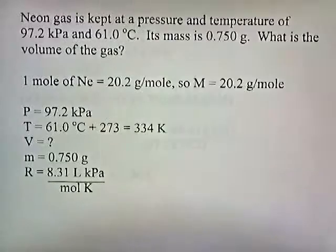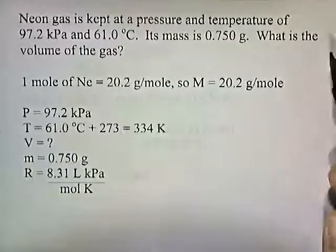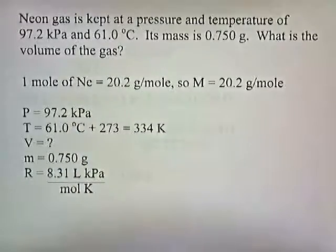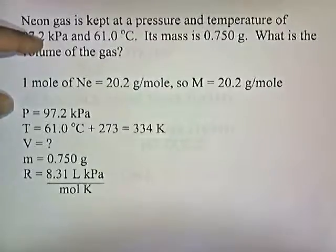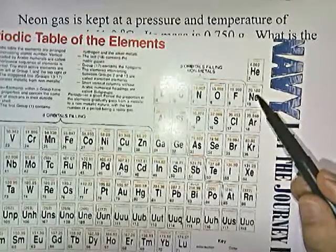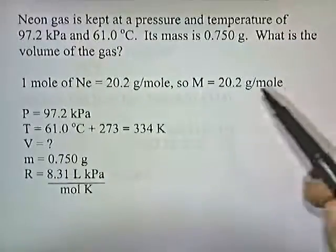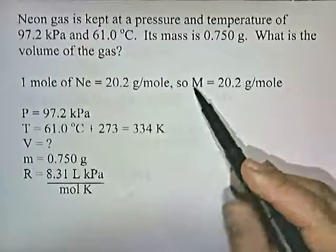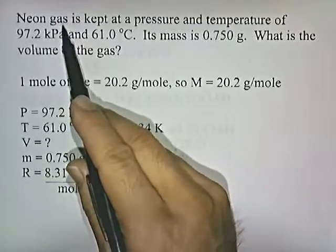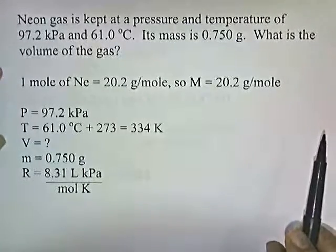Let's try a problem. Neon gas is kept at a pressure and temperature of 97.2 kilopascals and 61 degrees Celsius. Its mass is 0.75 grams. What is the volume of the gas? Implicitly, they tell you the molar mass of neon. Neon, on the periodic chart, weighs 20.18 grams. We're going to do this to three significant digits, so this is 20.2. They don't give you the value of capital M directly, but they give it to you implicitly by telling you the identity of the gas. Capital M will be 20.2 grams per mole.